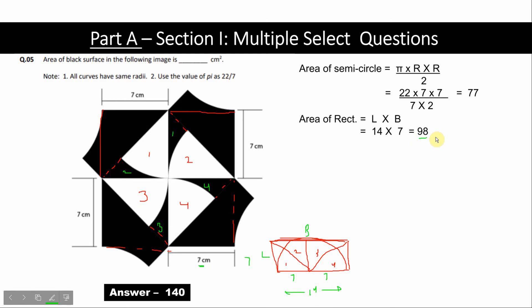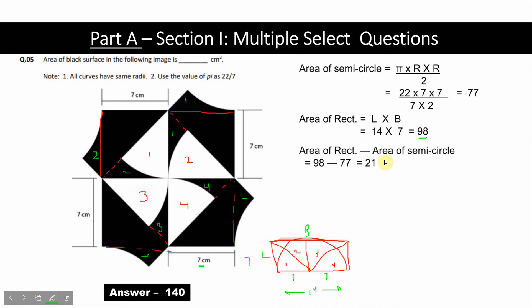Now if we subtract the area of the rectangle by the area of the semi-circle, we get the area of parts 1, 2, 3, and 4. We observe that these figures are also similar to 1, 2, 3, and 4, so if we multiply by 2, we get the area of all the parts colored green. Now the remaining portion is the triangles.